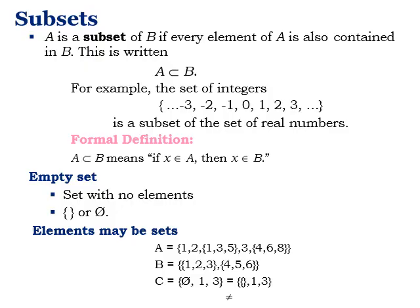Now let us learn about important parameters of sets. A is a subset of B if every element of A is also contained in B, written using the subset symbol. For example, the set of integers is a subset of the set of real numbers. Formally, A is a subset of B means: if x is an element of A, then x must also be an element of B.